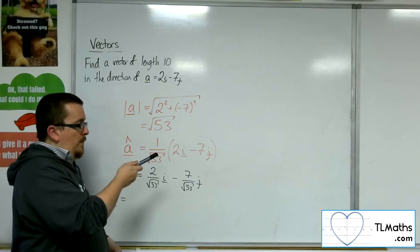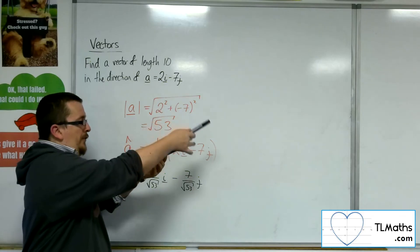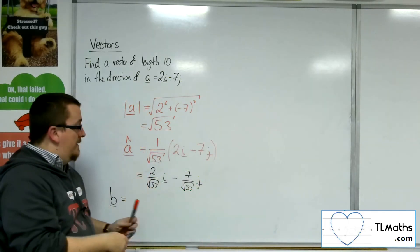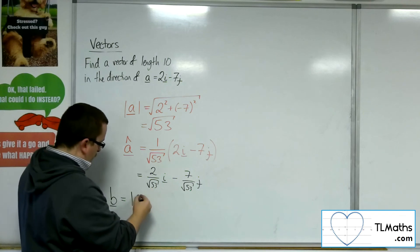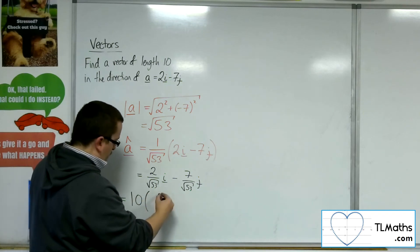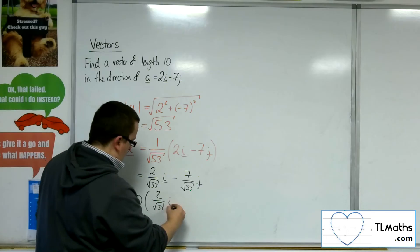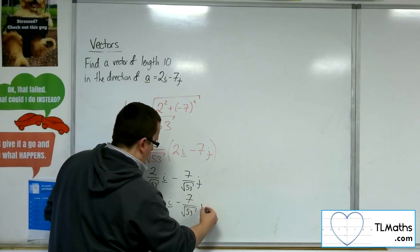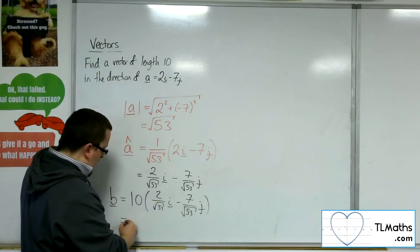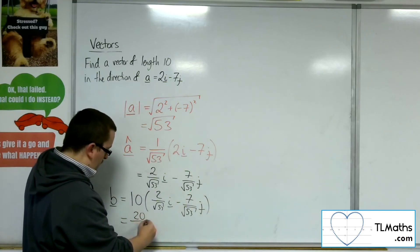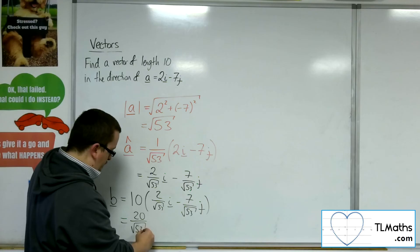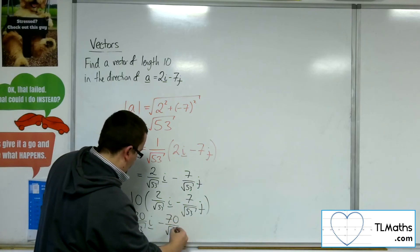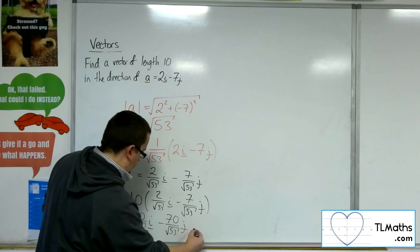So it's like having one pen, but wanting now to do 10 lots of that. So I could just multiply my vector by 10, and then I get a vector that is of length 10, but is still parallel to A.